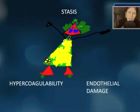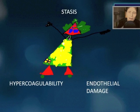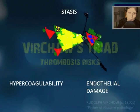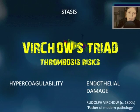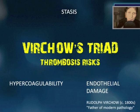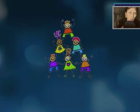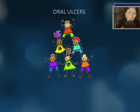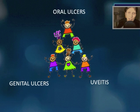Stasis, hypercoagulability, and endothelial damage — name the triad and its significance. This is Virchow's triad, and these are major risk factors for thrombosis.